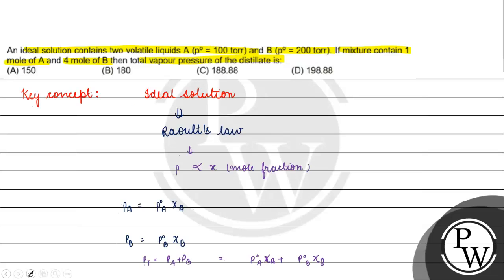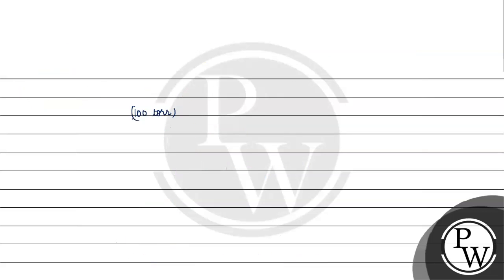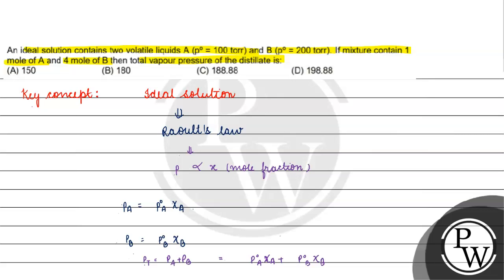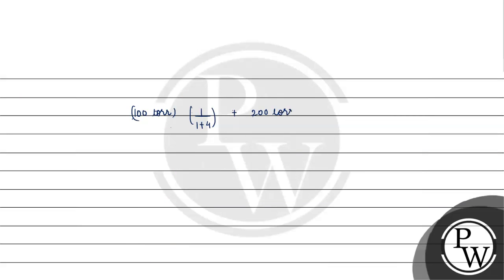χA = number of moles of A divided by total moles = 1 / (1+4) = 1/5. P_total = 100 × (1/5) + 200 × (4/5) = 100/5 + 800/5 = 20 + 160 = 180 torr.